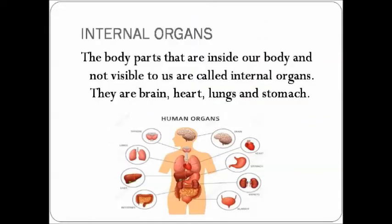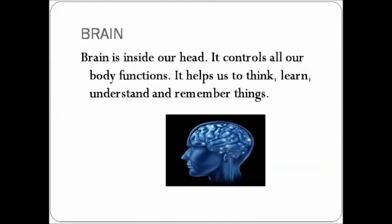Now we are going to see internal organs. The body parts that are inside our body and are not visible to our eyes are called internal organs. Examples are brain, heart, lungs, stomach, etc. Brain is inside our head. It controls all our body functions. It helps us to think, learn, understand and remember things.